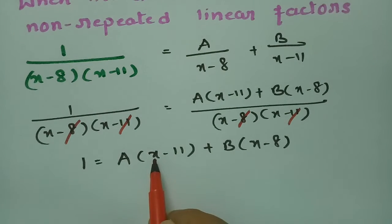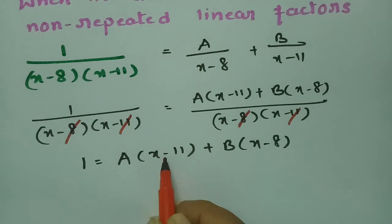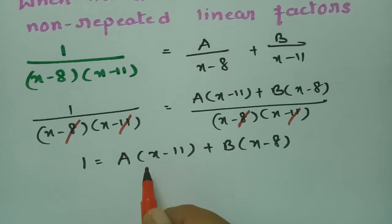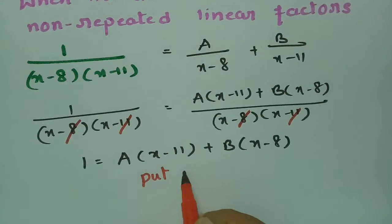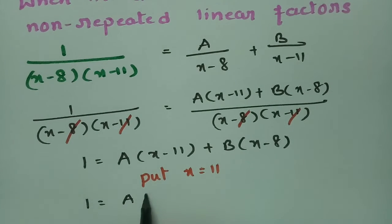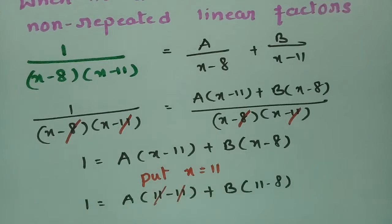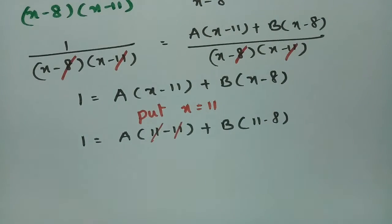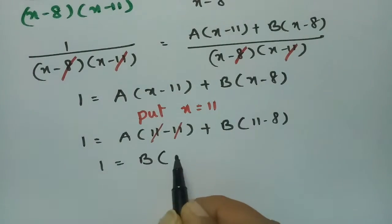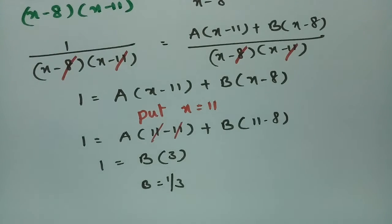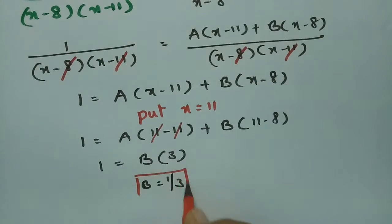In order to make the A term zero, there is minus 11, so if I keep plus 11, that term will be zero. Put x equal to 11 in equation 1: 1 = A(11 minus 11) + B(11 minus 8). The A term cancels, so 1 = B times 3. Therefore, B = 1/3.